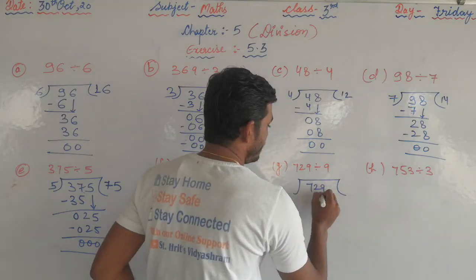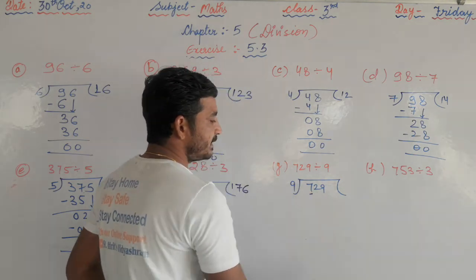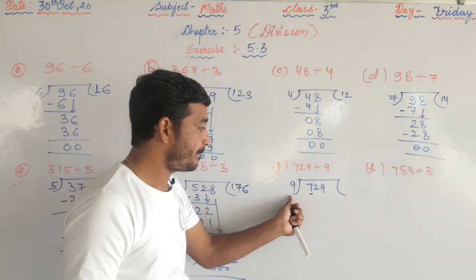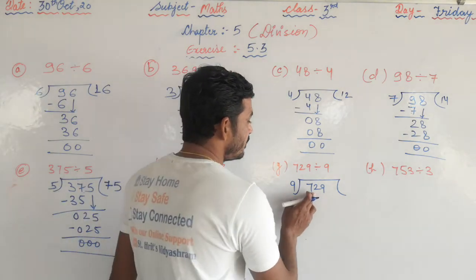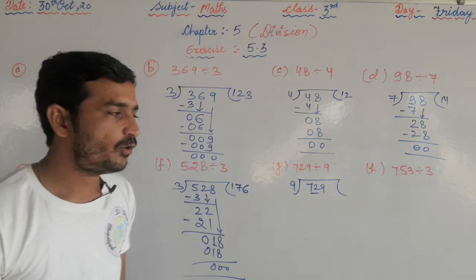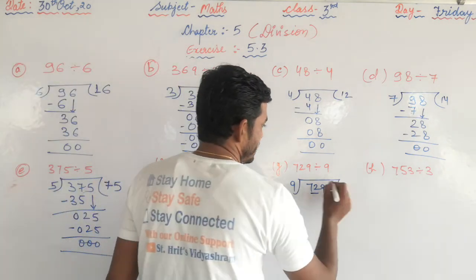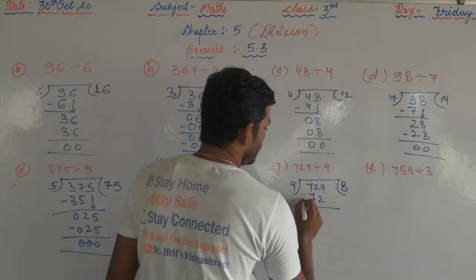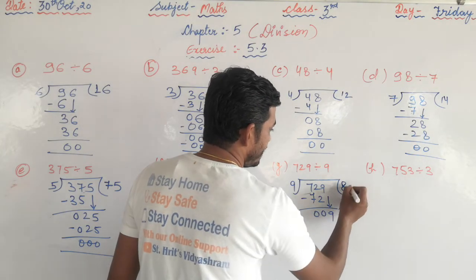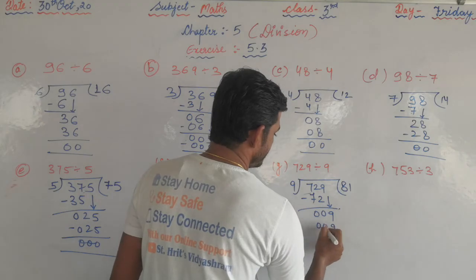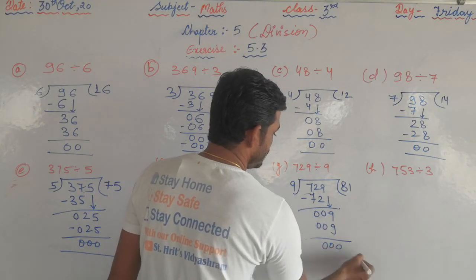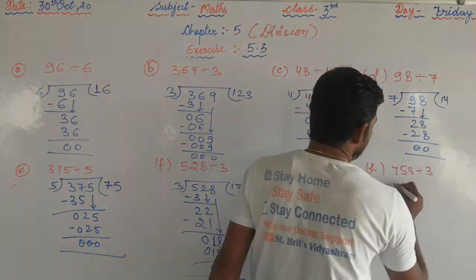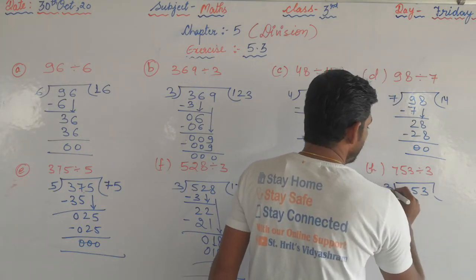Next, 729 divided by 9. First digit 7 is less than 9, so take two digits: 72. Nine eights are 72, subtract: remainder 0. Bring down 9: nine ones are 9, subtract: remainder 0. The quotient is 81.